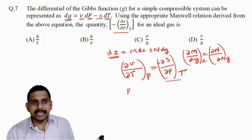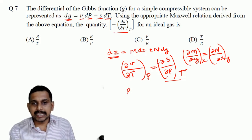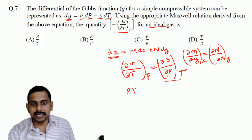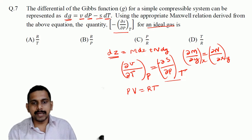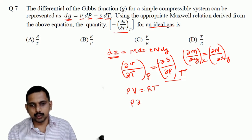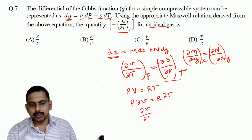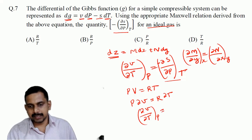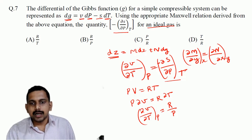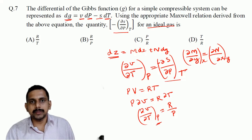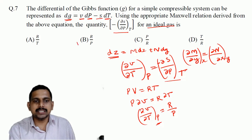For an ideal gas, PV = RT. Differentiating at constant pressure: P·∂V = R·∂T, so ∂V/∂T at constant P equals R/P. Therefore −∂S/∂P at constant T also equals R/P. The answer is B: R/P.